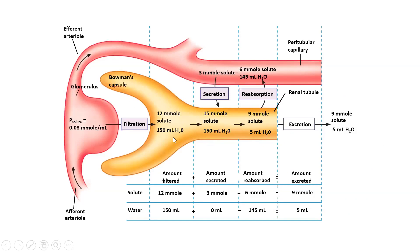Let's look at the overall osmolality of our tubular fluid and the four processes involved. Filtration is where we squeeze plasma across the glomerulus. In the first part of the Bowman's capsule, we have an overall osmolarity of 12 millimoles. Rather than looking at individual particles, we'll look at the overall osmolarity. Starting with a filtrate of 12 millimoles, after secretion occurs, we end up with 15 millimoles — meaning three millimoles of particles were secreted into the tubular fluid.